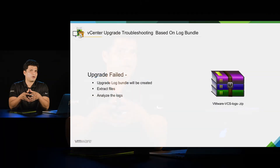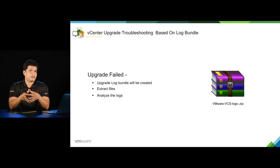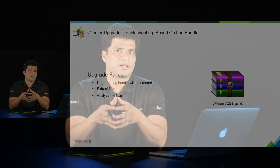So that was pretty much about vCenter server upgrade log workflow. At this point we understand the different logs and know at which stage these logs are getting created. The next question is how can we identify at which stage our upgrade is failing? By looking at the installer screen we can identify this, but what if somebody is sending you log bundles? In the next video let's do vCenter server upgrade troubleshooting based on log bundle. Thank you.